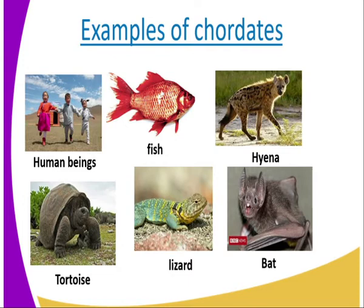The notochord is found on the dorsal side of the body. Two, the Chordata are bilaterally symmetrical, whereby we mean that if you cut them, you will be able to get two identical parts. Three, they have a single dorsal tubular nerve cord. In higher chordates, it develops into the brain anteriorly and the spinal cord posteriorly. The spinal cord is enclosed in the vertebral column. Another characteristic of Phylum Chordata is that they have pharyngeal clefts.